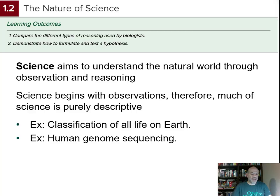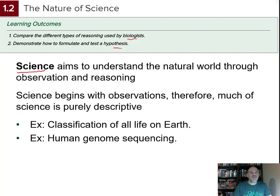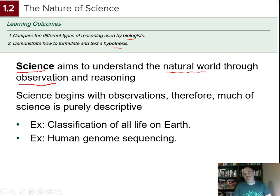The next section describes the process of science — a way of knowing about the natural universe. The learning outcomes include comparing different types of reasoning used by biologists and demonstrating how to formulate and test a hypothesis. Science is a process of trying to understand the natural world through observation and reasoning. If you cannot observe something with your senses or extensions of them like a microscope or telescope, it will not qualify as science.